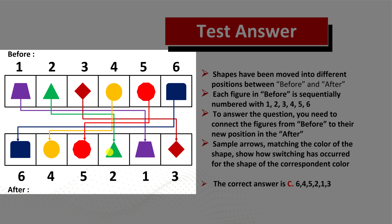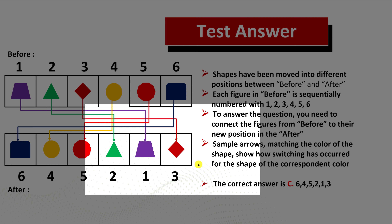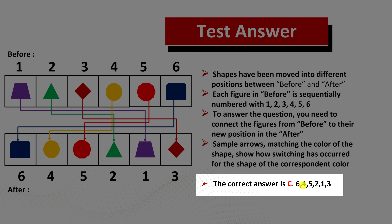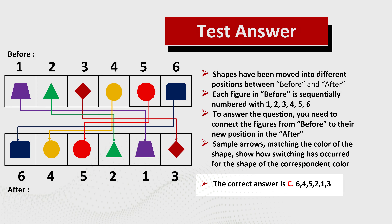The correct choice here is choice C: 6 4 5 2 1 3. Hopefully you've nailed this question and now know how to answer similar questions on the test. If you need more practice problems, please check out my ebook in the description section of this video.